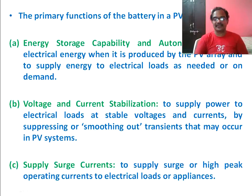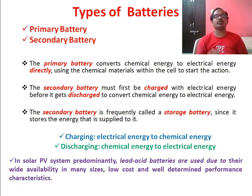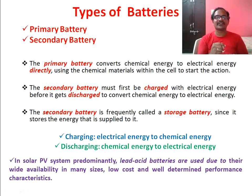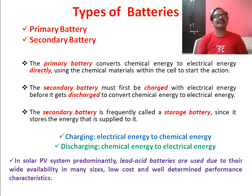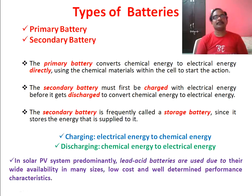There are two different types of batteries: primary batteries and secondary batteries. Primary batteries are not rechargeable, whereas secondary batteries are rechargeable — also called storage batteries. While charging, electrical energy is converted into chemical energy; while discharging, the stored chemical energy is converted back into electrical energy. In solar PV systems it is recommended to use lead acid batteries owing to their availability in a large number of sizes, lower cost, and well-determined characteristic parameters and performance. Nowadays, lithium ion batteries are also on the market — they are more costly but more accurate than lead acid batteries.